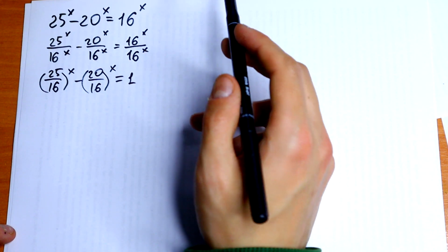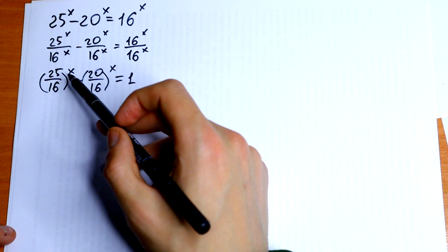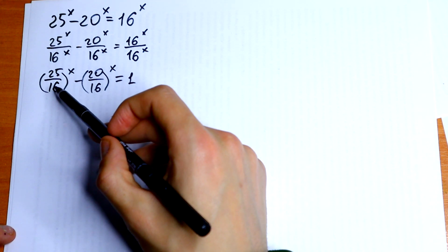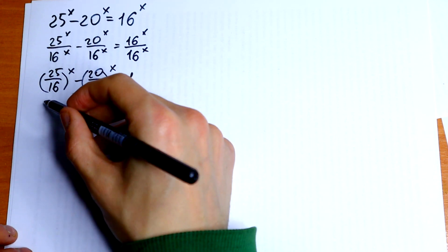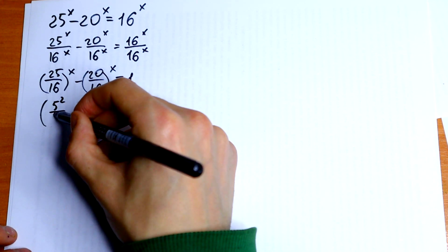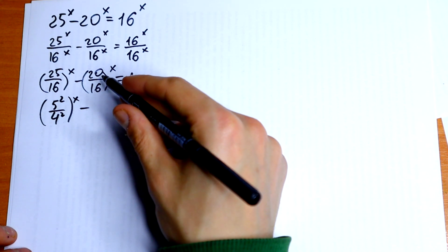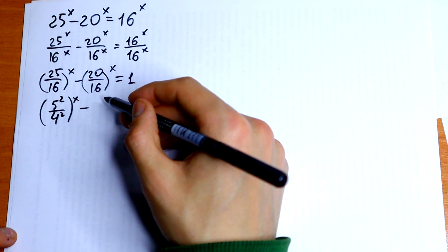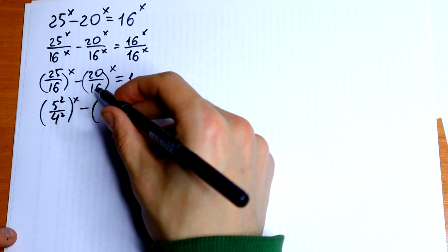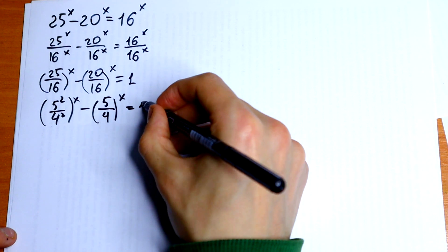I see that 25 I can represent as 5 squared, and 16 I can represent as 4 squared as well. So let's try to do this. We get 5 squared over 4 squared to the power x, minus — for 20 over 16 I can divide numerator and denominator by 4 — so I will get 5 over 4 all to the power x, equal to 1.